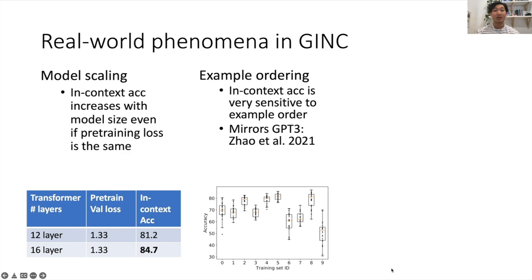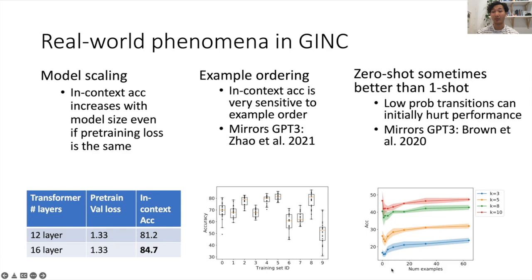We find that in-context learning accuracy is very sensitive to example ordering, which mirrors GPT-3. And also we find that zero-shot performance is sometimes better than one-shot performance. And this mirrors GPT-3's behavior on some datasets. And the hypothesis is that low probability transitions from concatenating examples can initially hurt the performance.